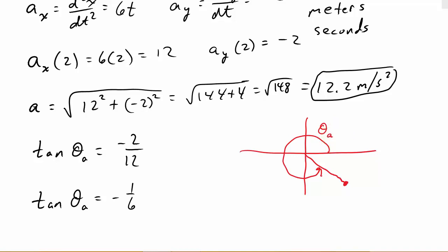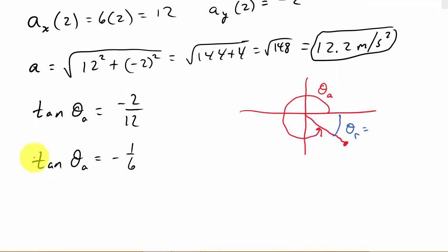What we need to do first is calculate the reference angle. Once we get the reference angle, we can figure out what θ_a is. Remember, to get the reference angle—that should be r for the reference angle—this will have to equal positive 1/6. Remember that from trig.